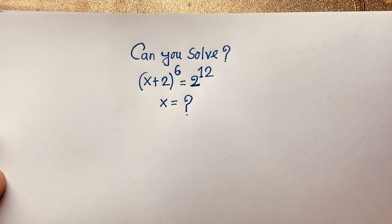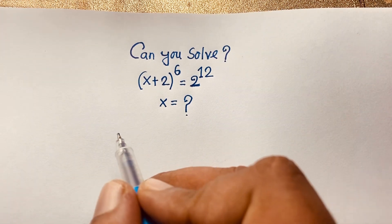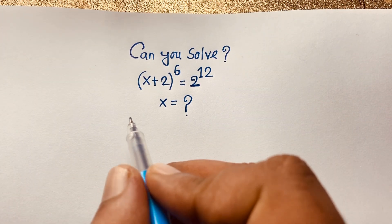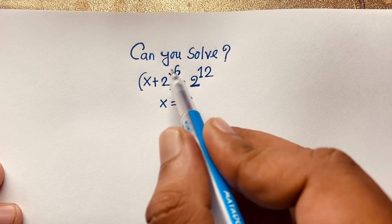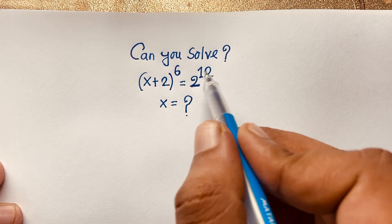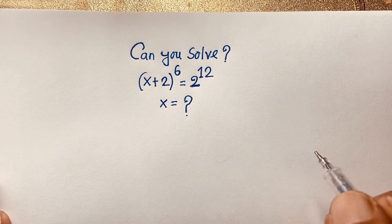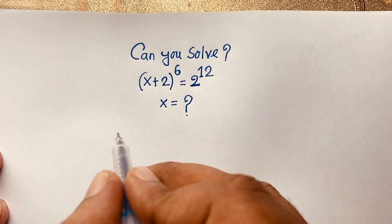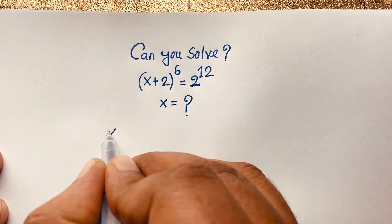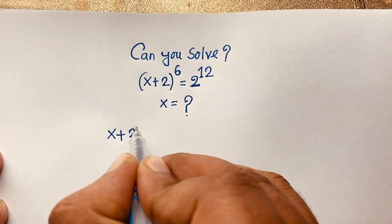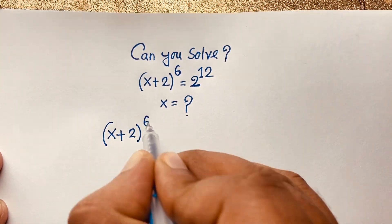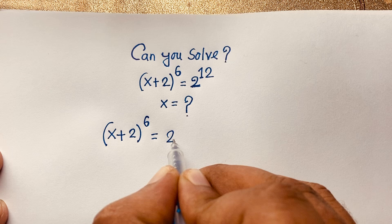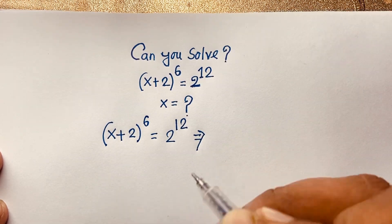Hello everyone, welcome to Russia's classroom. Today we have solved a nice exponential expression — this Math Olympiad question. It will be (x + 2) whole to the power 6 is equal to 2 to the power 12. We find out what is the value of x in this exponential expression. Our question: (x + 2)^6 = 2^12.